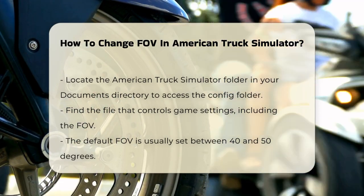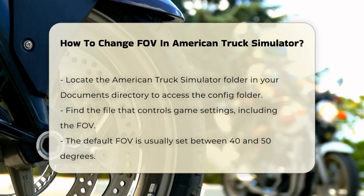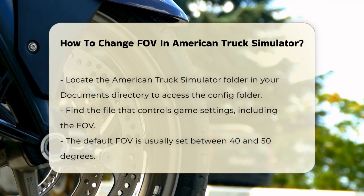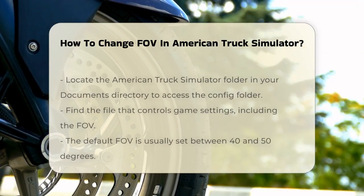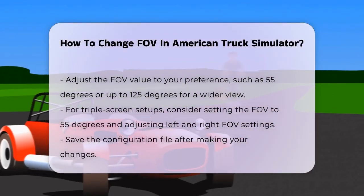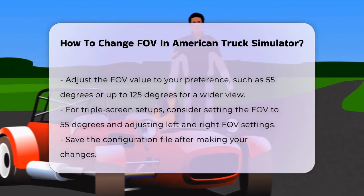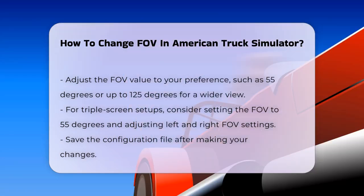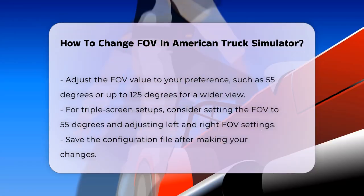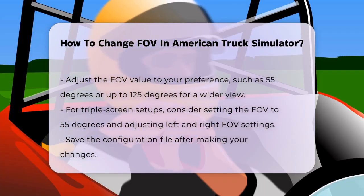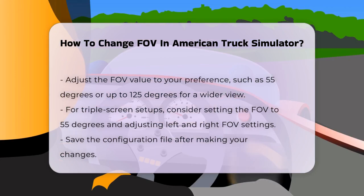You can change this value to whatever you prefer, such as 55 degrees or even up to 125 degrees if you want a very wide view. For example, if you're using a triple screen setup, you might set the FOV to 55 degrees and also adjust the left and right FOV settings to ensure the best correction for your monitors. Save the file after making these changes.